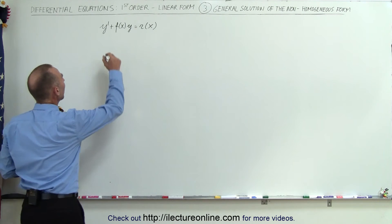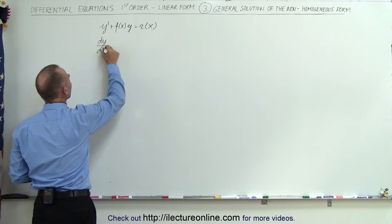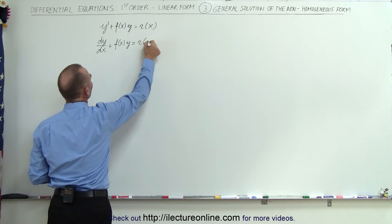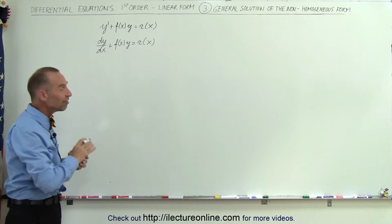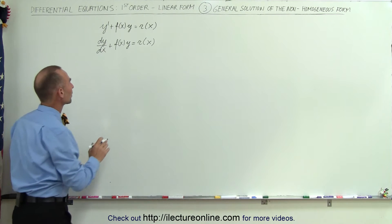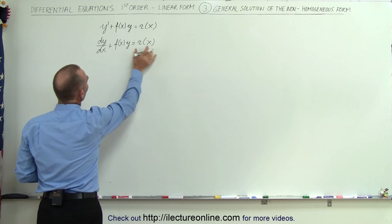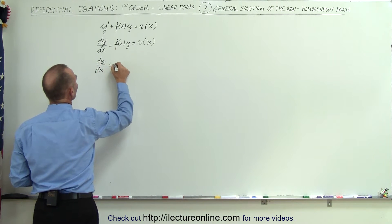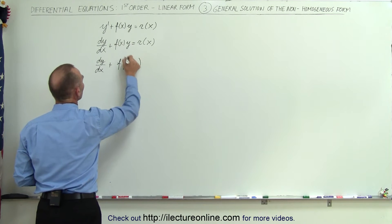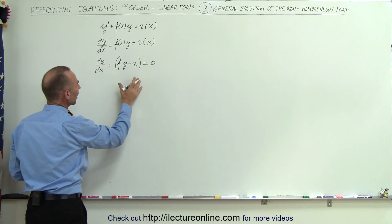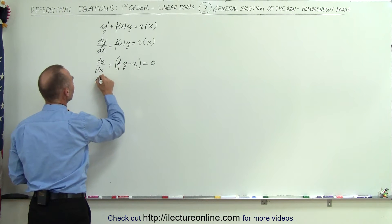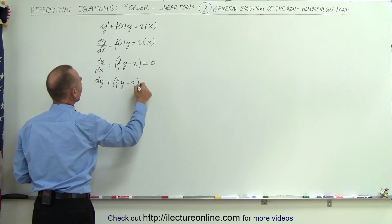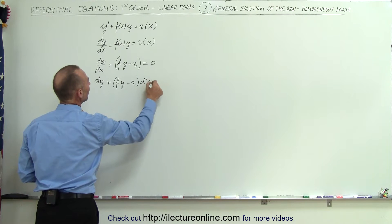The first thing we're going to do is write it as dy/dx plus some function of x times y is equal to some other function of x. From now on we'll simply write f and r, understanding that those are functions of x. We're going to bring the r over to the left side, so this becomes dy/dx plus f times y minus r is equal to 0. Multiplying both sides by dx, we get dy plus f(x)·y minus r(x) times dx is equal to 0.